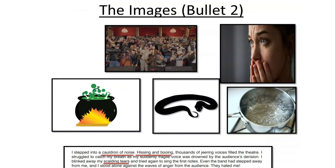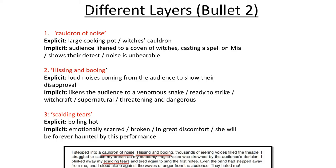Now let's take a look at the images I've selected from bullet point B. I've selected 'cauldron of noise,' 'hissing and booing,' and 'scalding tears.' Cauldron — looking at that noun, of course it refers to a large cooking pot, or maybe a witch's cauldron. Implicitly, it could be suggesting that the audience are like a coven of witches casting a spell on Mia. It shows their detest for her. The noise is unbearable — you can't escape it. Hissing and booing: on an explicit layer, it refers to loud noises coming from the audience to show their disapproval. Implicitly, it perhaps likens the audience to a venomous snake — are they ready to strike at any minute? It builds on that previous image of the supernatural and witchcraft, and of course snakes are threatening and dangerous.